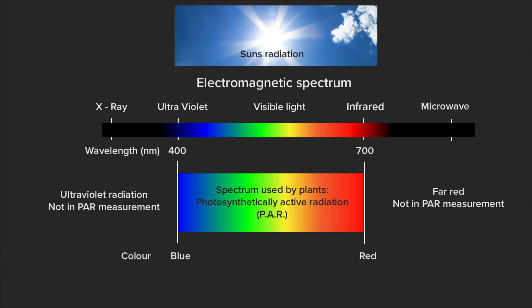Welcome again. Shane from iGrow. Here we are discussing light and different wavelengths. We've talked about PAR, blue, red, and green wavelengths of light. Also another video on far red, which is one end of the spectrum. Now we're going to go to the other end of the electromagnetic spectrum, talking about UV light.